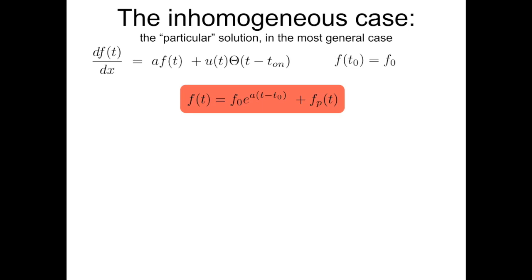Now you're ready to see and understand, in a deep way, how the particular solution works in the most general case, where the non-homogeneous term u(t) can be an arbitrary function — constant, a sinusoid, or anything — multiplied by a step function indicating a time t_on when the external input is switched on. The solution is the sum of two terms: the autonomous response of the system in the lack of external drive, reminiscent of some memory captured by the initial condition, plus the particular integral related to the specific non-homogeneous term.